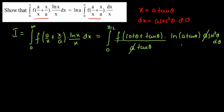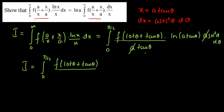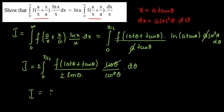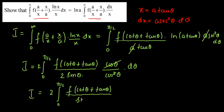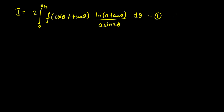The a's cancel. Simplifying, I equals the integral from 0 to π/2 of f(cot(θ) + tan(θ)) times [ln(a·tan(θ))] divided by [sin(θ)/cos(θ)] times (1/cos²(θ)) dθ. Opening sin and cos terms, and multiplying and dividing by 2 to form sin(2θ), we get I = 2·∫₀^(π/2) f(cot(θ) + tan(θ)) · ln(a·tan(θ)) / sin(2θ) dθ. Call this equation 1.